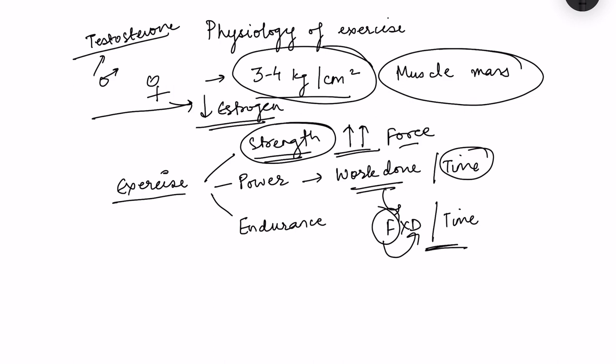Power is determined by many things: strength, because the component of force is there, and also the rate of doing work. This rate of doing work depends on how the body is supplying ATP to the muscles. If the ATP supply is very quick, then the power will be more; if the ATP supply is slower, then the power will be less.